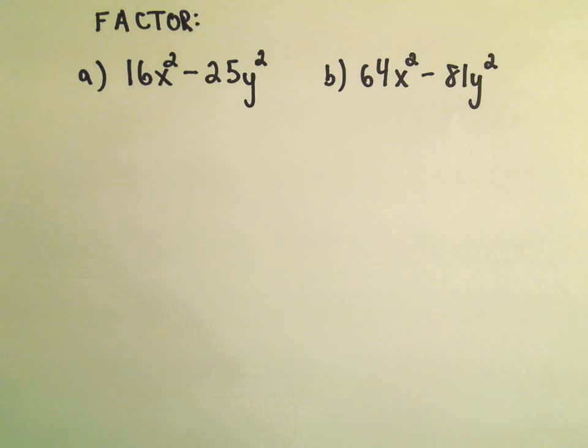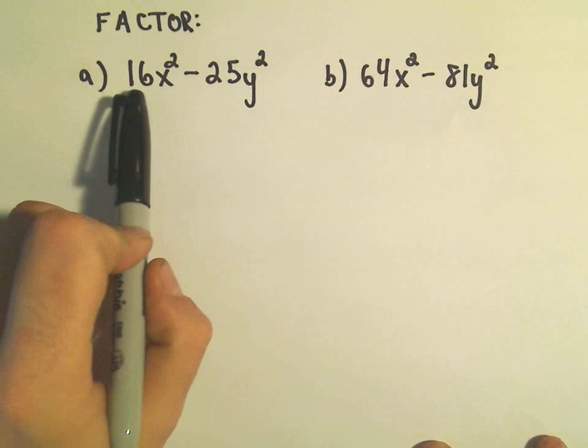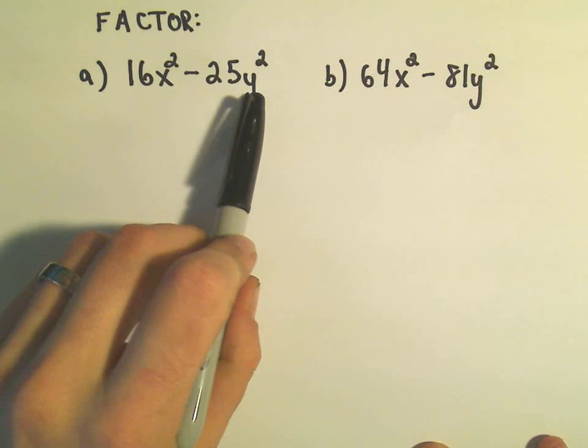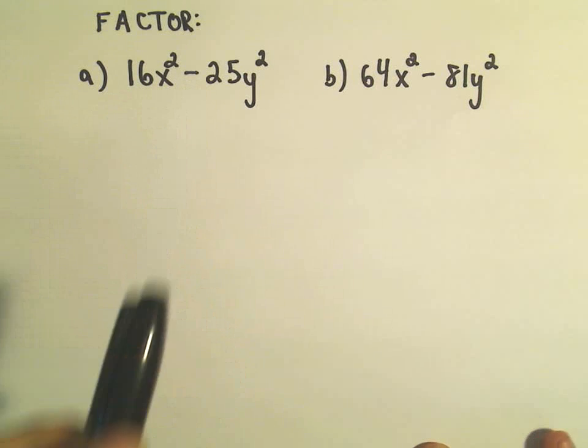So again, I look at this and I think, well, I've got two terms: 16x squared and 25y squared, and I'm subtracting them.